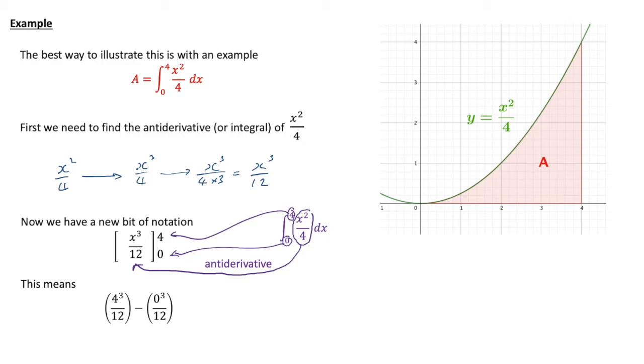In this case, that's nice and easy. 4 cubed is 64, so that's 64 over 12. 0 cubed is 0, so it's minus 0 over 12, and that gives us 16 over 3 when we cancel down, or 5.33 to 2 decimal places.